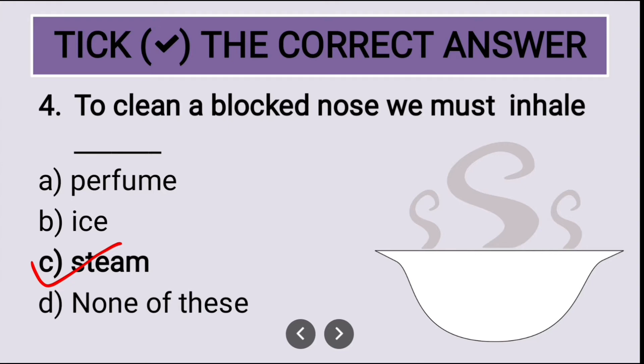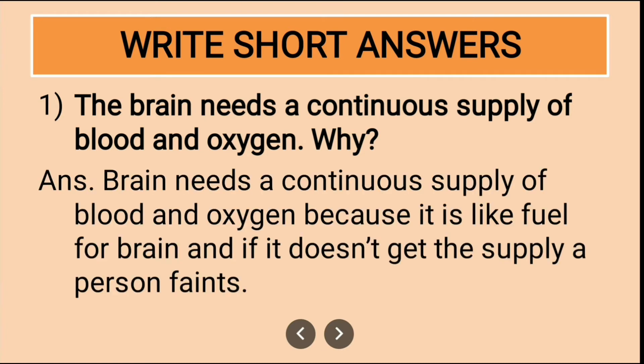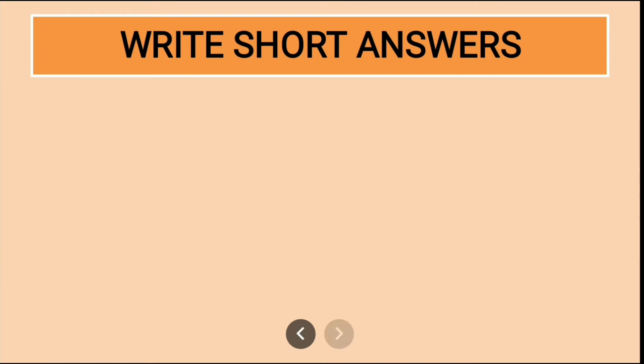Next section: write short answers. First, the brain needs a continuous supply of blood and oxygen. Why? Answer: brain needs a continuous supply of blood and oxygen because it is like fuel for the brain. And if it doesn't get enough supply, a person might faint.